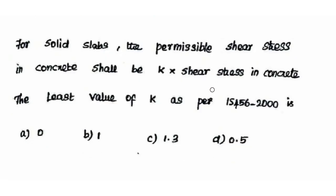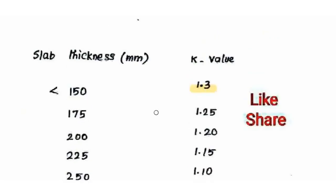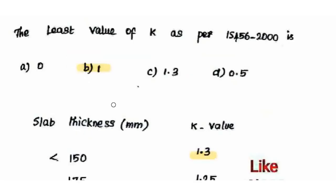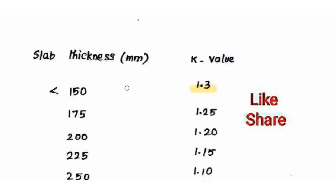Next question: For solid slabs, the permissible shear stress in concrete shall be K × shear stress in concrete. What is the least value of K as per IS456? The K value varies with slab thickness. The least value of K is 1 (for slab thickness ≥ 300 mm) and the highest value is 1.3 (for slab thickness ≤ 150 mm).